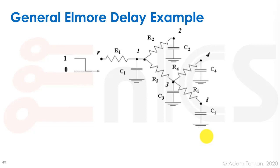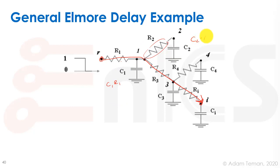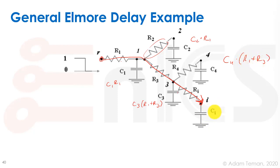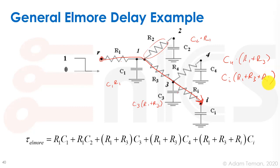In a more complex example with multiple branches: C1 sees only R1, so R1·C1; C2 also sees only R1 (the branch containing R2 is not on the path), so R1·C2; C3 sees R1+R3, giving (R1+R3)·C3; C4 also sees R1+R3, giving (R1+R3)·C4; and Ci on the output branch sees R1+R3+Ri, giving (R1+R3+Ri)·Ci. Summing all of these gives the Elmore tau for the network.